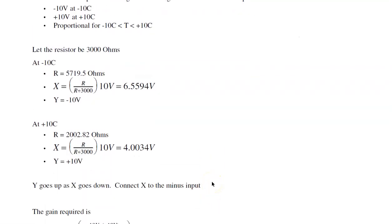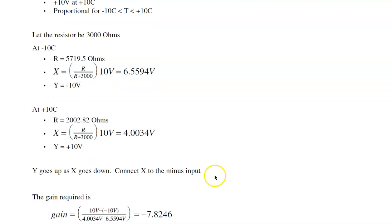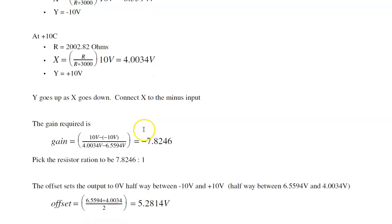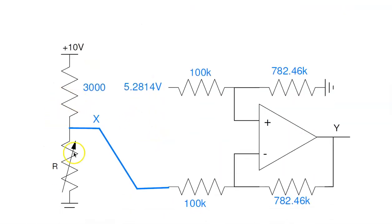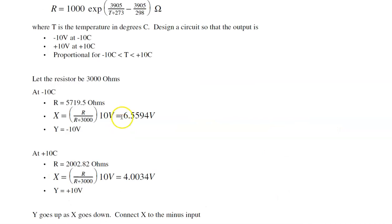The first step is to find the range of resistance. The resistor goes from 5719 ohms to 2002 ohms as temperature goes from minus 10 to plus 10. To convert that to a voltage, use the voltage divider. That'll be right here. Now let's calculate the voltage X. X will be by voltage division R1 over R1 plus R2 times 10 volts. So that gives you the voltage goes from 6.5 volts to 4 volts.